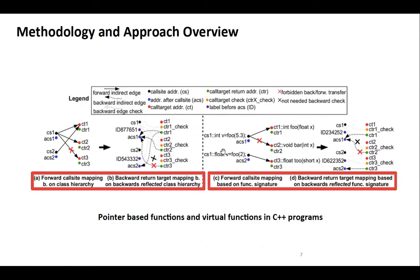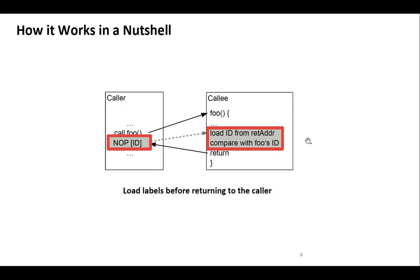On the right side we can see what we do with virtual function calls. In this case we build the class hierarchy of all the classes in the program, and we enforce a certain part of the class hierarchy for the object which calls the virtual function, reflecting that subhierarchy for that particular call. In each caller, after the call to the callee, we insert a NOP instruction with some ID, and then before the function terminates we load that ID and compare those IDs together. If they match, we let execution continue; otherwise we stop execution.